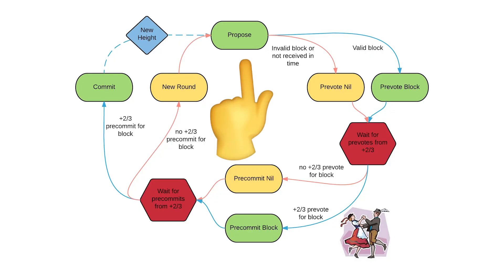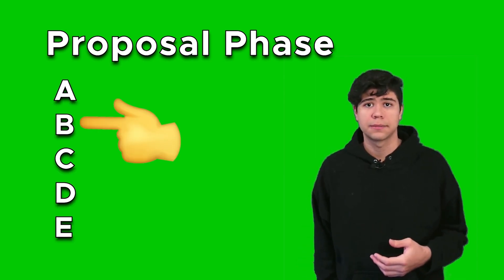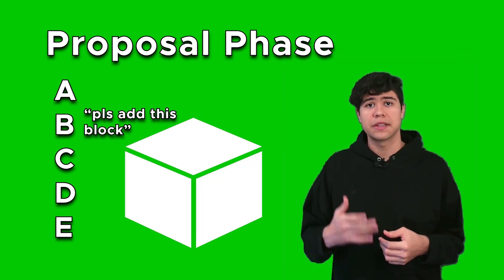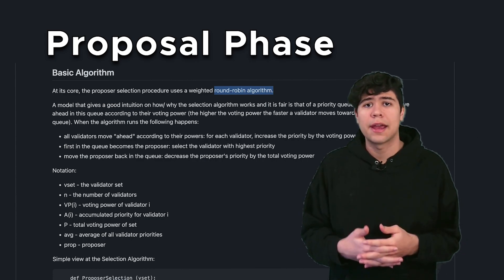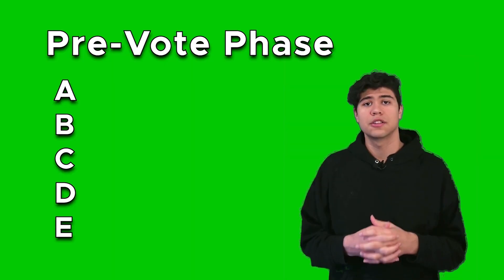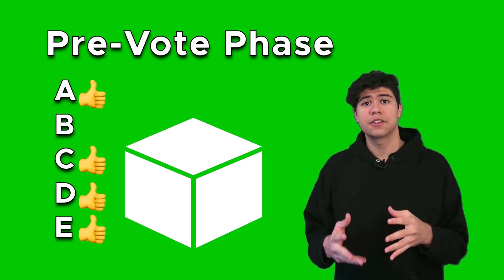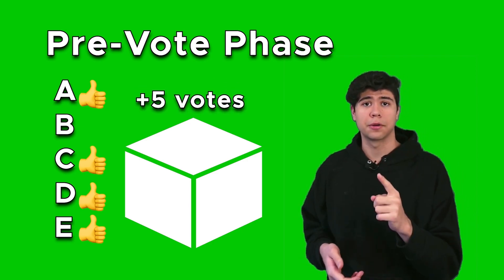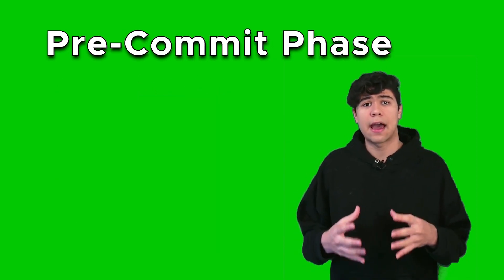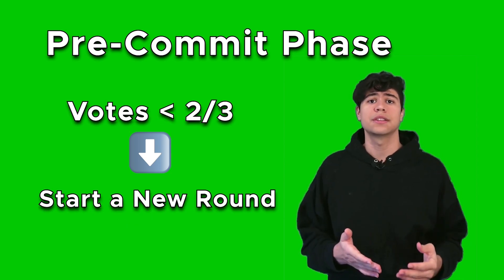Let's use Tendermint in a proof-of-stake blockchain example. The validator set has five validators: A, B, C, D, and E. Let's say B is chosen to propose a new block. The block proposer B looks through the mempool, grabs transactions, computes them, makes state transitions, and proposes the block. Block proposers are chosen at random using a round-robin algorithm — the more stake you have, the more likely you are to be chosen. In the pre-vote phase, validators check for invalid transactions. If valid, they pre-vote and add one vote; if offline or invalid, they vote nil. If votes exceed two-thirds of the validator set, they add a block with a new block height; otherwise, they start a new round.